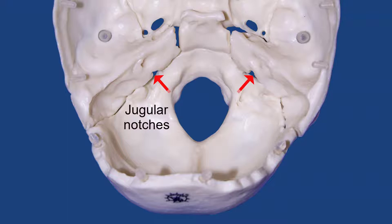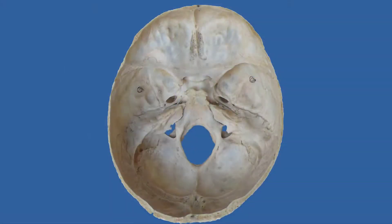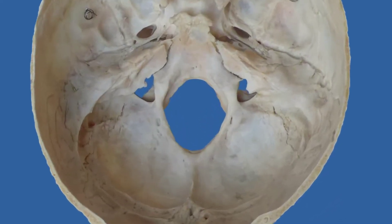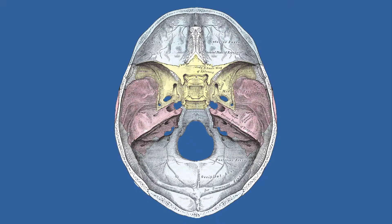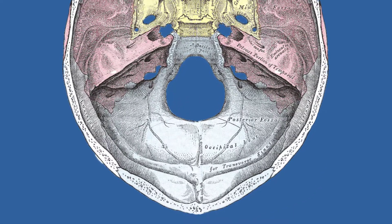It is a little bit subtle in this particular plastic skull, but if we take a look at an actual skull — this is a picture from the internet through a Creative Commons license — you can see that the jugular notch is very deep and distinct in this specimen. And if you look at this figure from Gray's Anatomy, the 1918 edition, again through a Creative Commons license, you can see the foramen magnum is very obvious and the jugular foramen on either side.